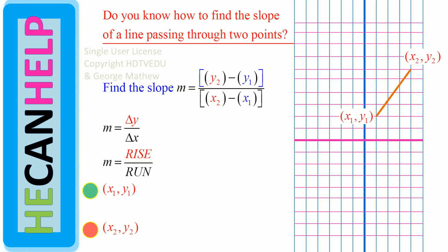Slope is change in y over change in x. Most of you have learned slope as rise over run. That means when you go from left to right along the horizontal, what do we see? We see a rise for this line — a vertical rise. So the vertical rise divided by horizontal run — slope is rise over run. Sometimes rise is positive. Sometimes when you go from left to right, the line falls — slope is negative. Sometimes when you go from left to right, the line just stays horizontal, in which case the slope is zero. And sometimes the line is vertical, in which case there is no slope — the slope is undefined.